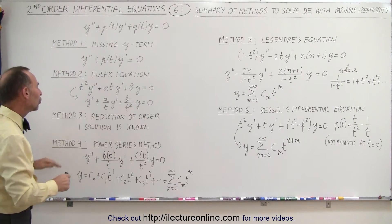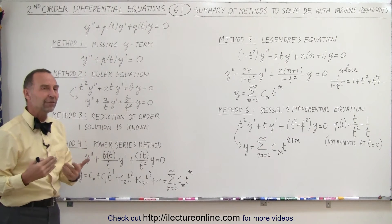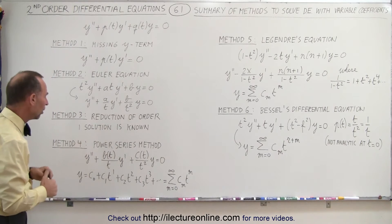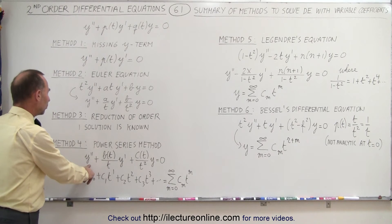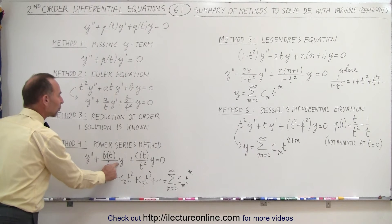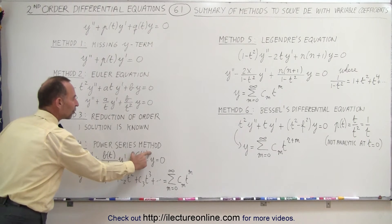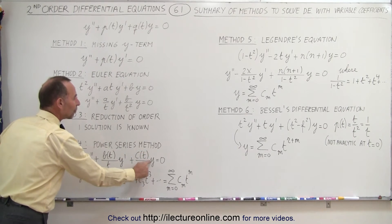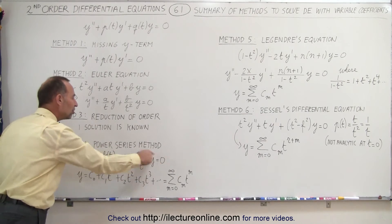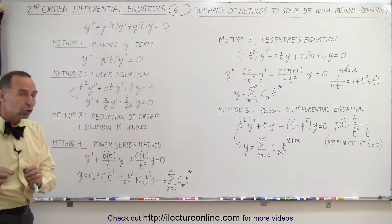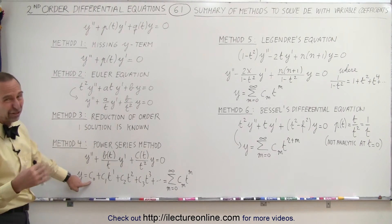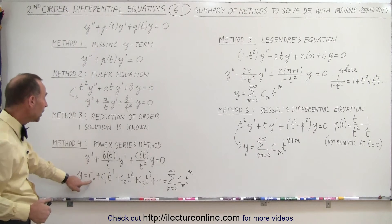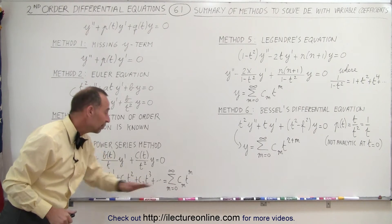The fourth method is called the power series method, and there's a lot of different ways in which this is used. But the most common example of that is if we have the equation in this format, we have y double prime plus some function of t divided by t times y prime plus another function of t divided by t squared times y equals zero. If we can put the equation in this format, then the solution to the equation will be an infinite sum, which can be compacted to be written like that.